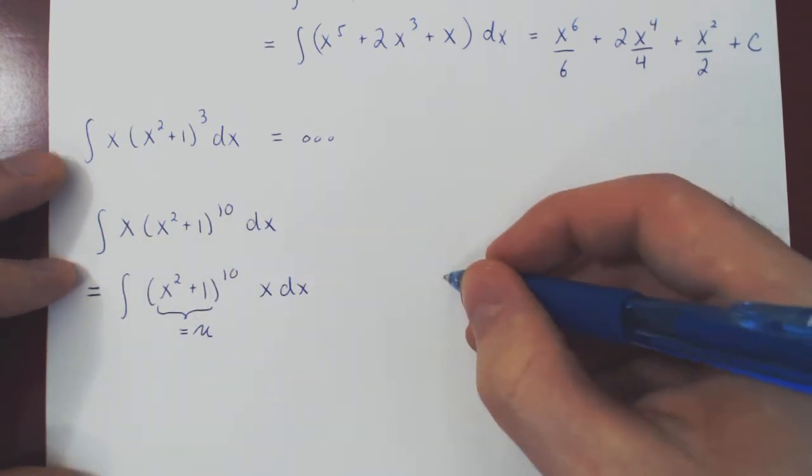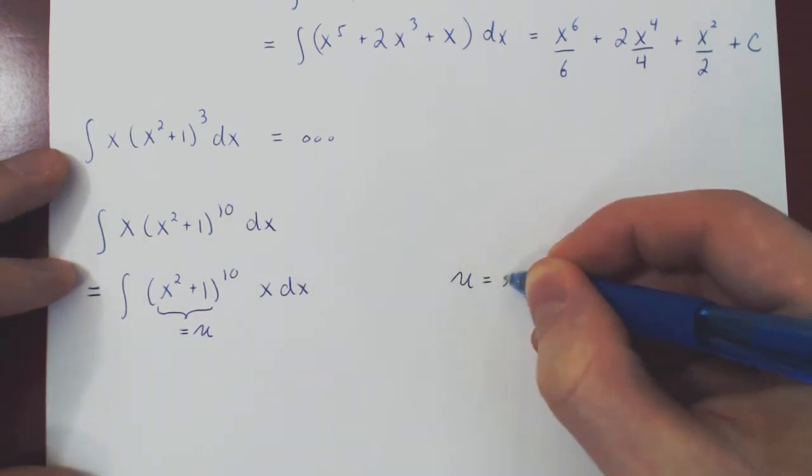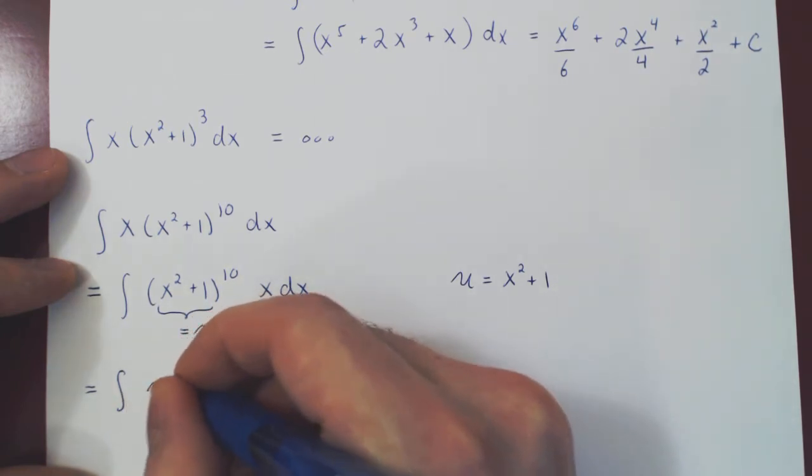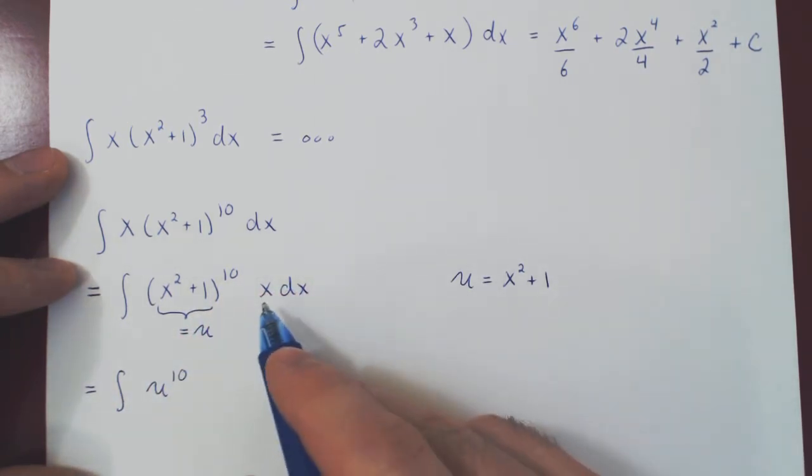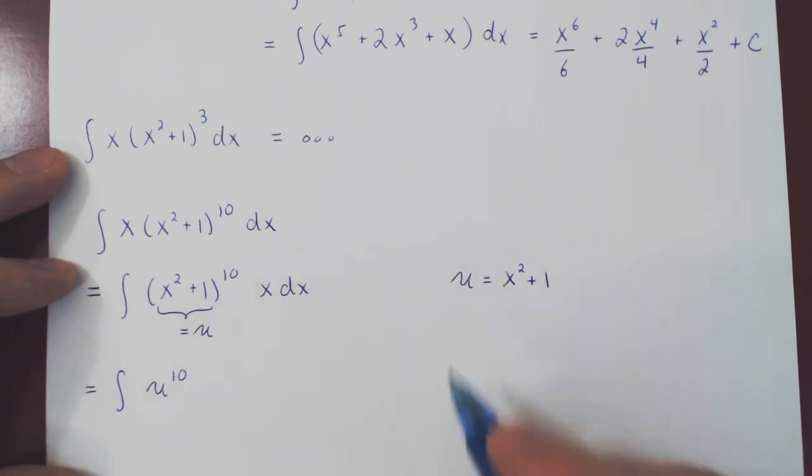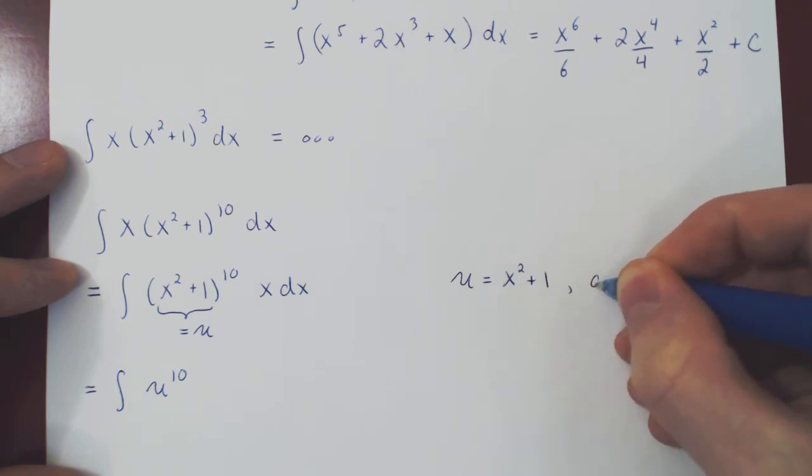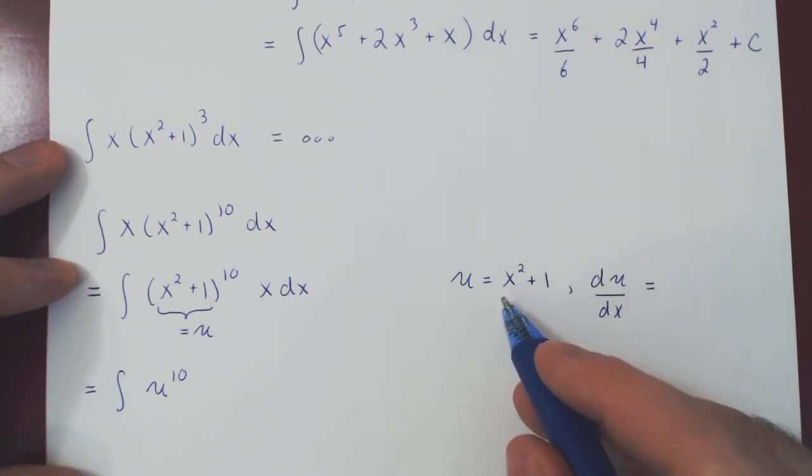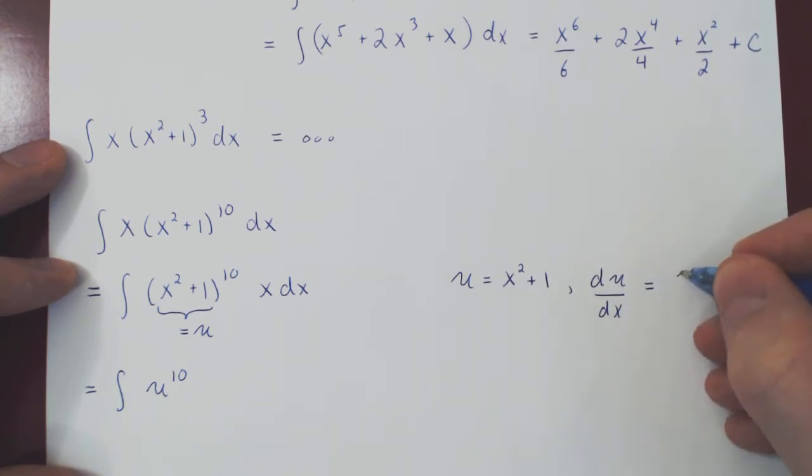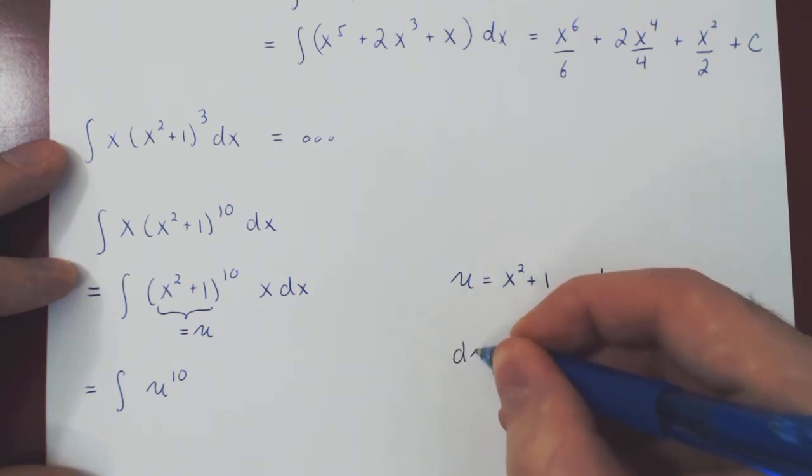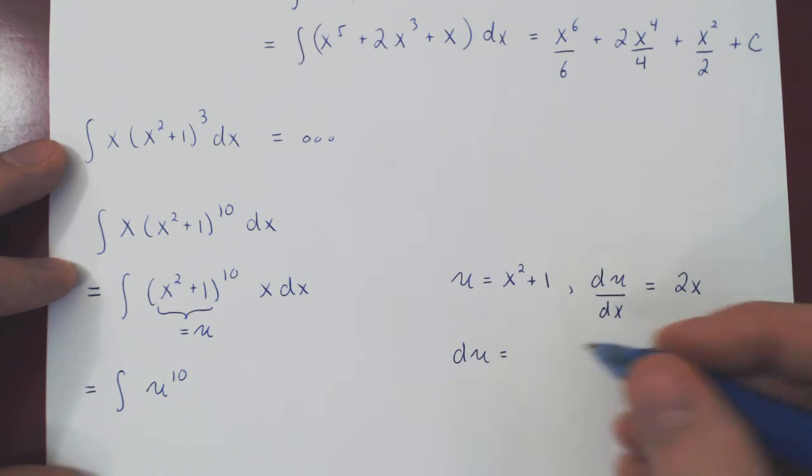So we let u be x squared plus 1. So let's replace now. We'll have the integral of u to the 10th power. And to find our dx, we need to find the derivative of our function. U is a function of x. So we differentiate u with respect to x, du over dx. The derivative of x squared plus 1 is simply 2x.